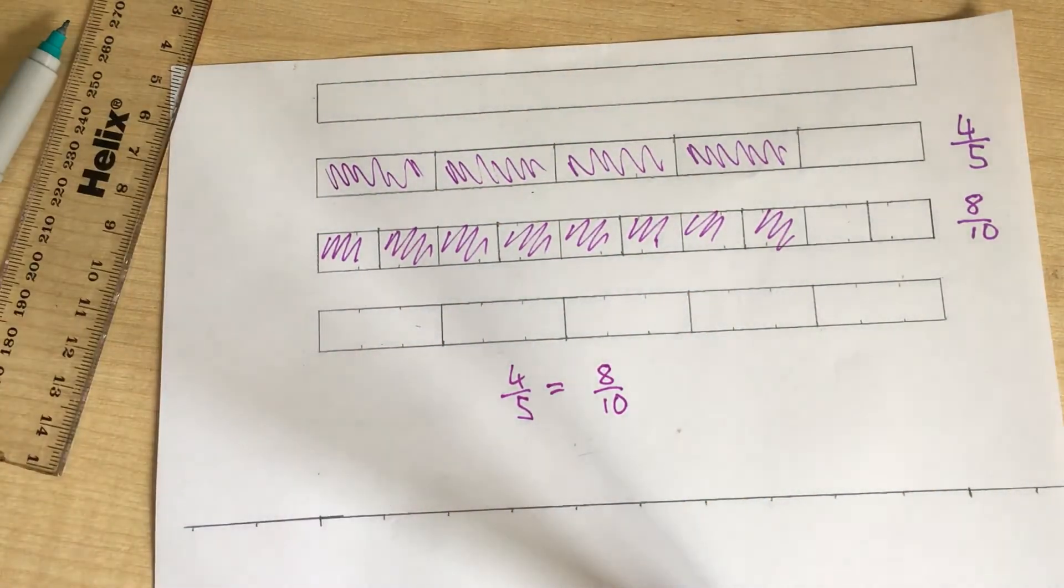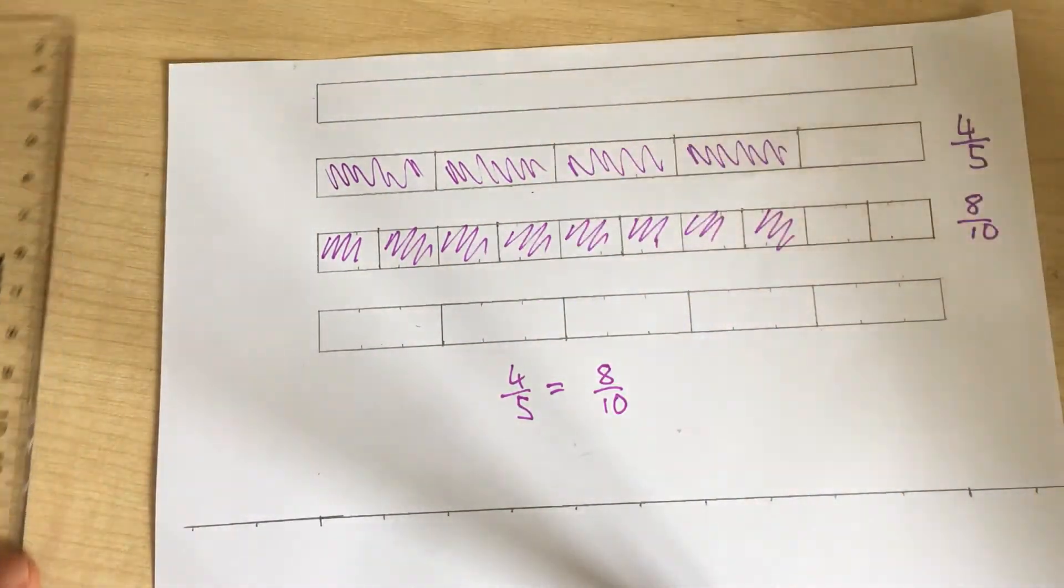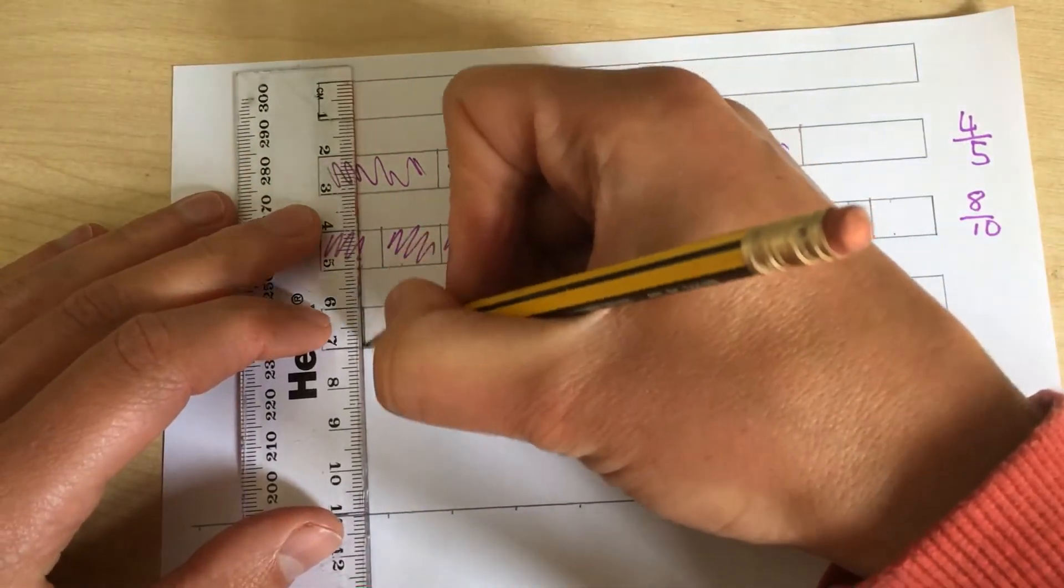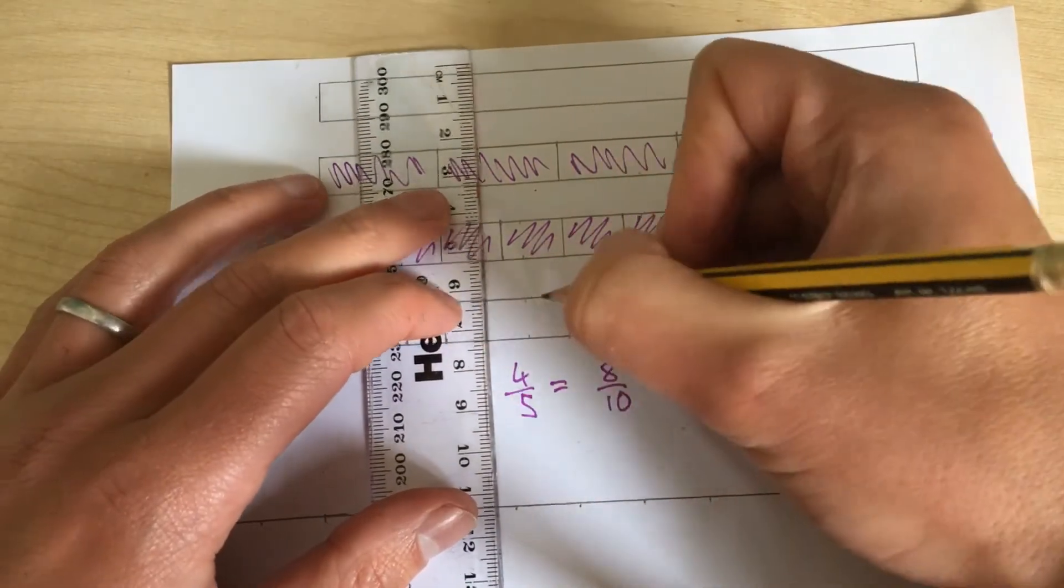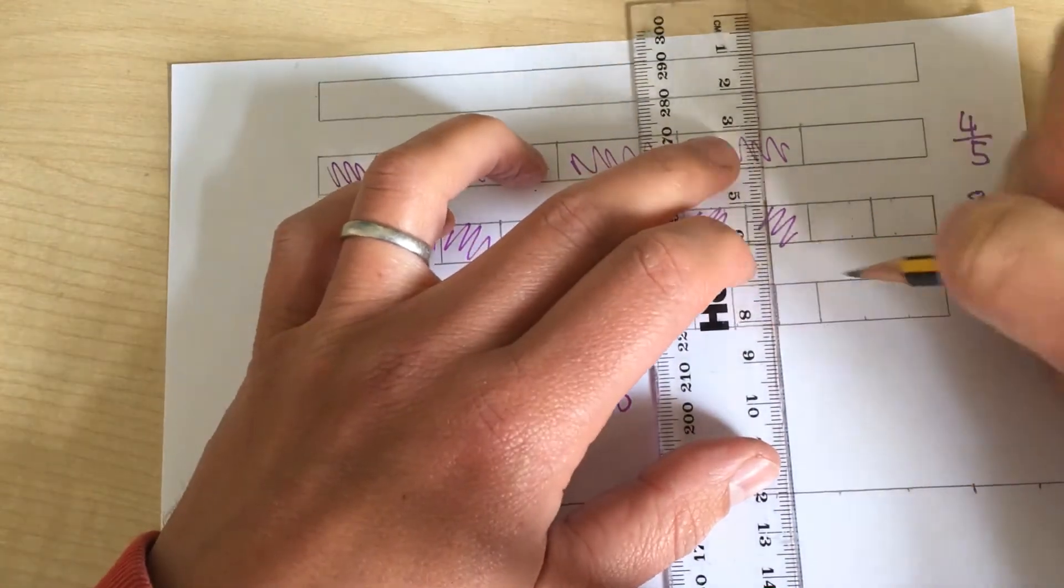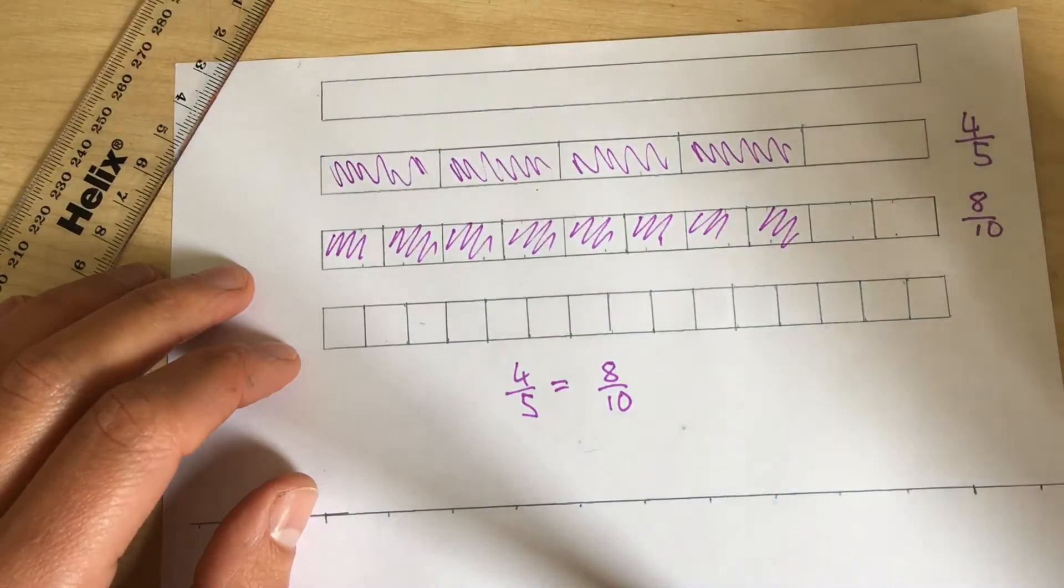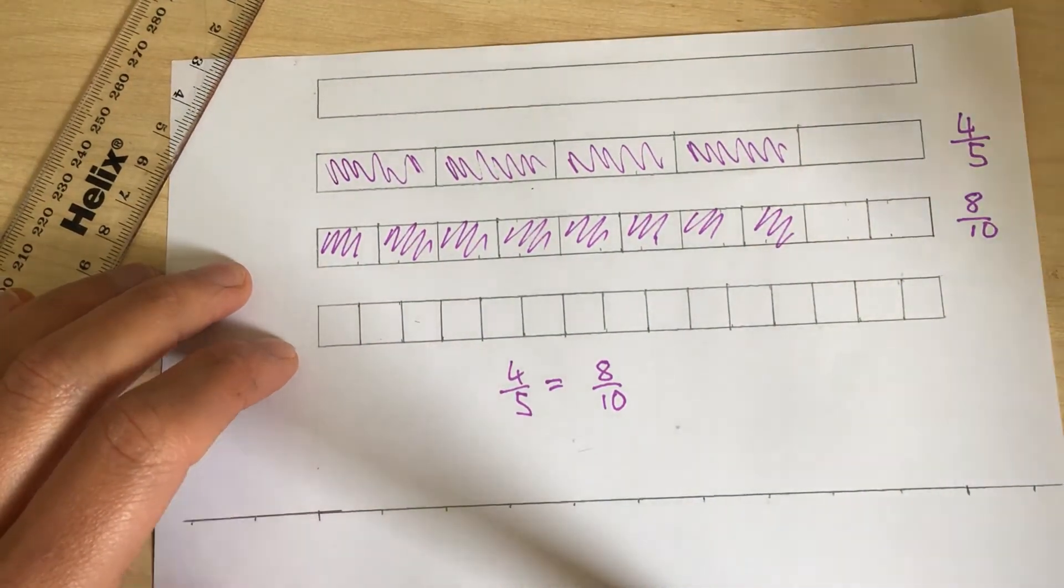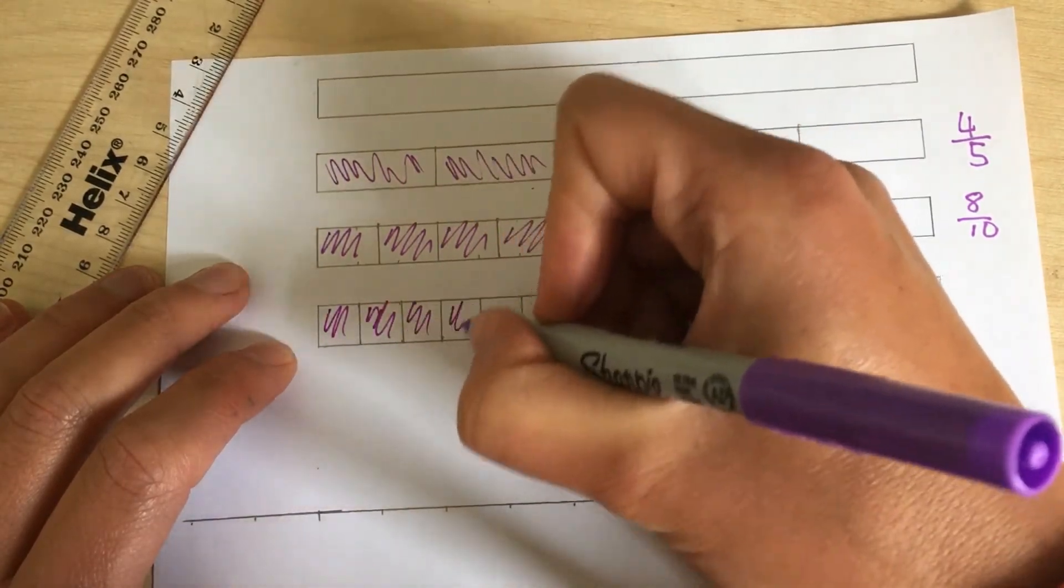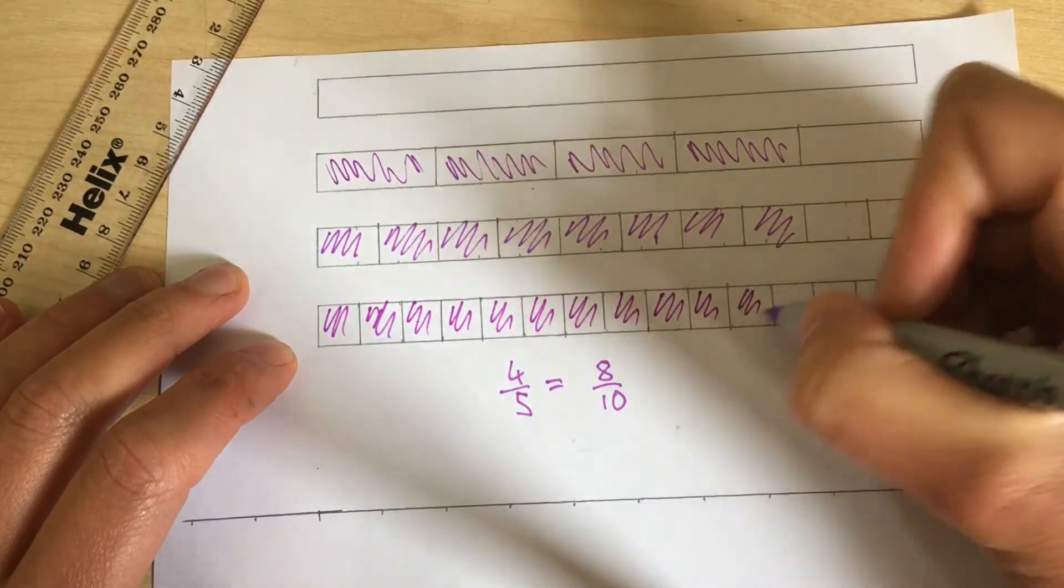They are equivalent. In this third bar, it's currently split into five equal parts. But what if I split each of these parts into three smaller ones, all the same size? So that will give me 15 parts all the way along here. And what if I shade in 12 of them? One, two, three, four, five, six, seven, eight, nine, ten, eleven, twelve.